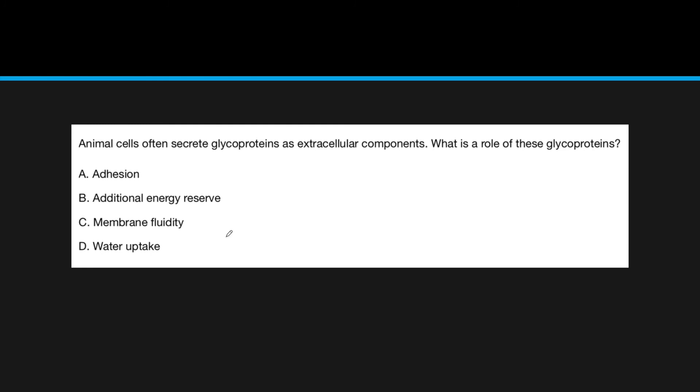Here's a second question: animal cells often secrete glycoproteins as extracellular components. What is the role of these glycoproteins? As we discussed, these proteins have an extra part which allows for cell recognition. A cell with another protein will come by and recognize the correct cell. It can be multiple things, but usually it's adhesion. So adhesion makes sense.